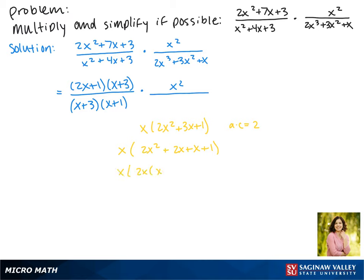Now using grouping, we're going to factor a 2x out of the first two terms. We can't factor anything out of the last two terms. This will give us x times 2x + 1 times x + 1. Putting that back into our expression.